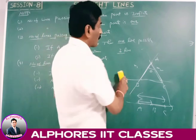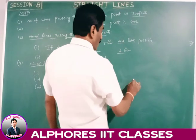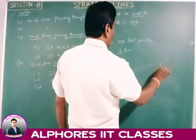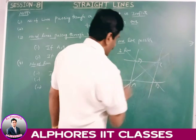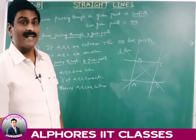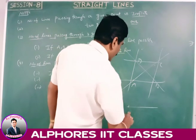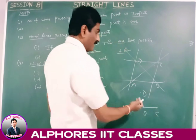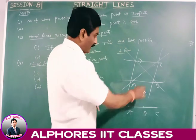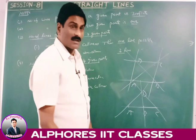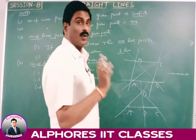Similarly, if 4 points are given and they are arranged as A, B, C, D with no three collinear, there are 6 possible lines. If A, B, C, D are all collinear, only 1 line is possible. If any 3 of them — say A, B, C — lie on the same line and D does not, then 4 lines are possible.